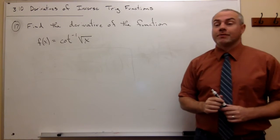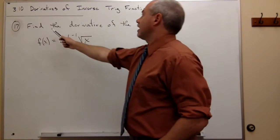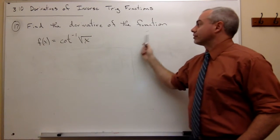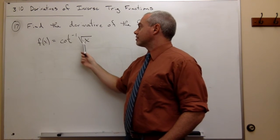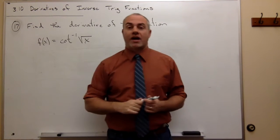Now let's take a look at problem number 17. In 17 I want to find the derivative of the function f(x) equals cotangent inverse of the square root of x.